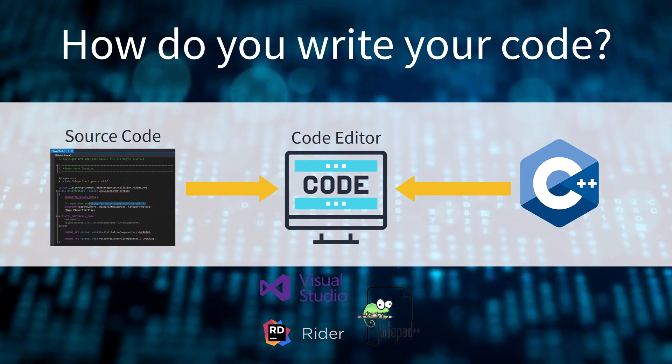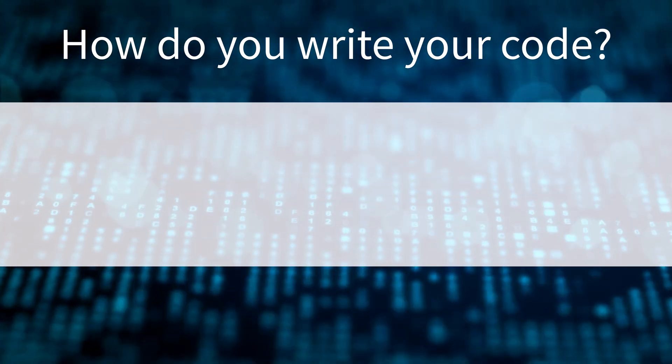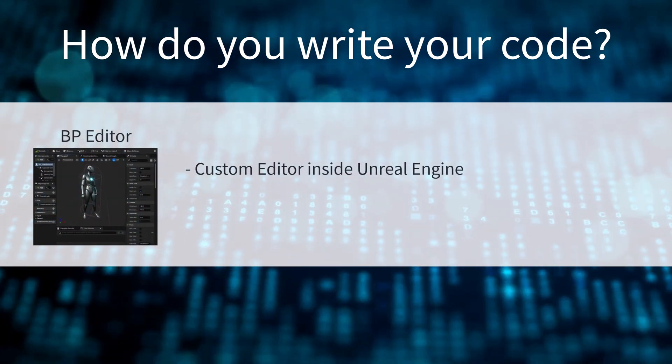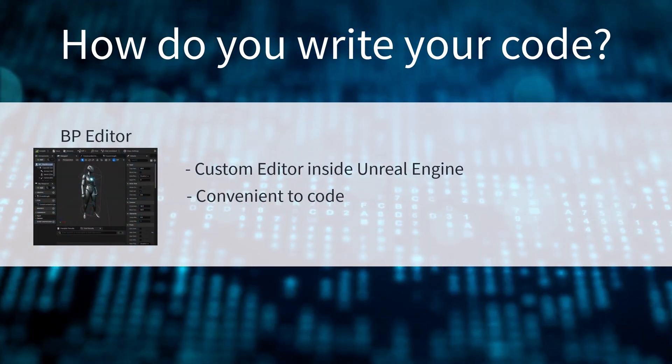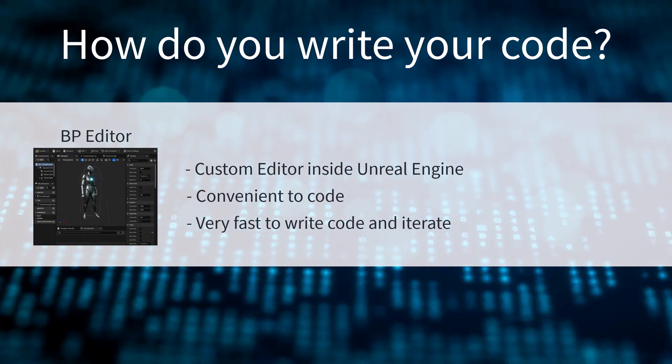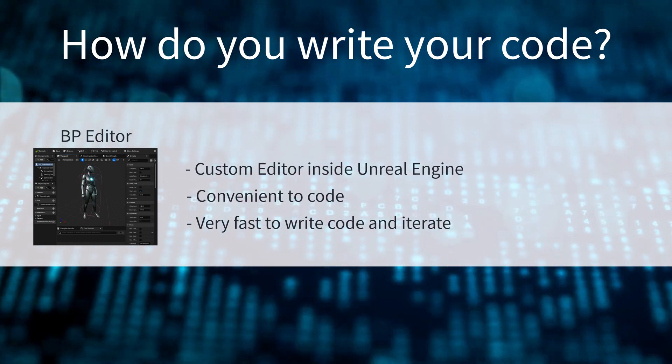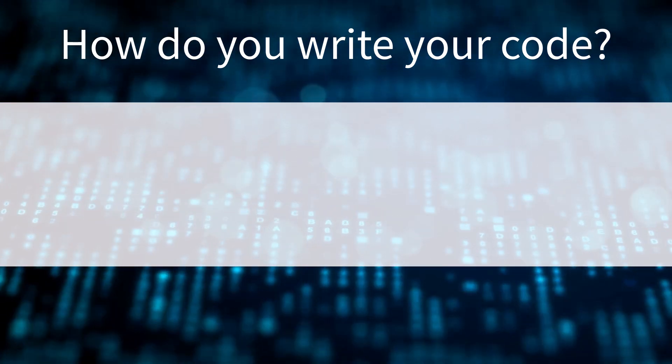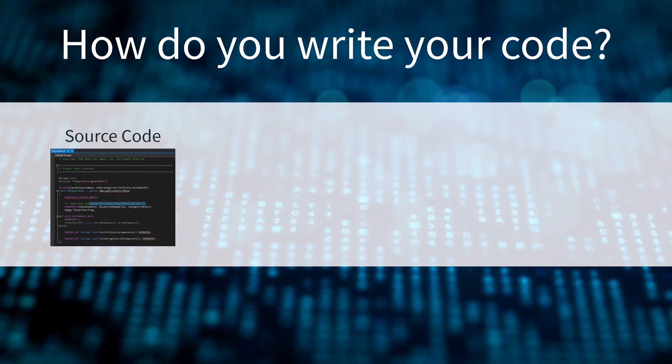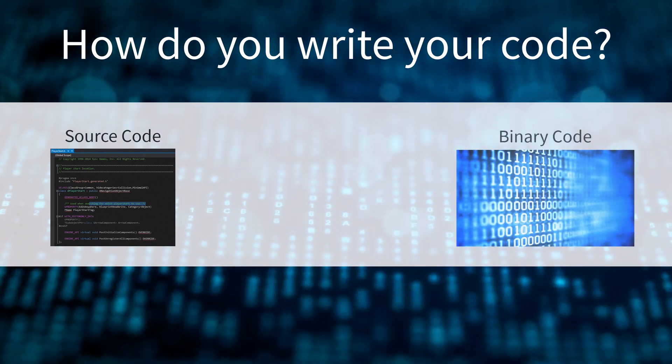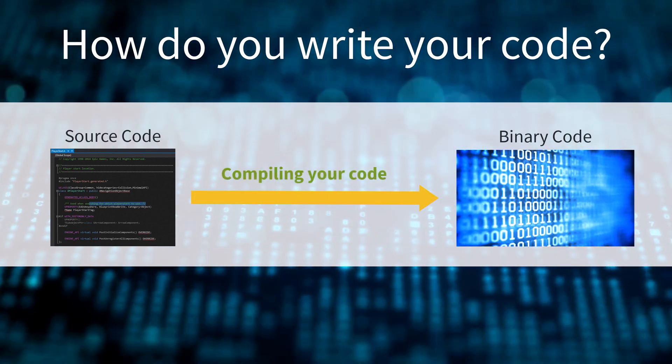Unreal Engine has a custom code editor for blueprints built inside the Unreal Engine. This makes it convenient and very fast to write your code and see the results. The source code you write needs to be converted to a format the computer actually understands, and the process of converting your human readable code or source code into machine code is called compiling your code.